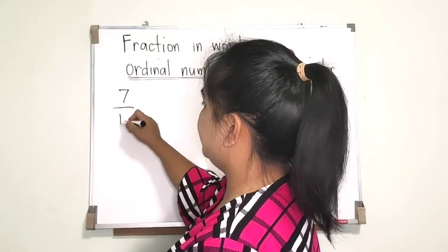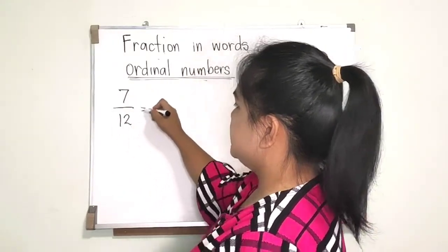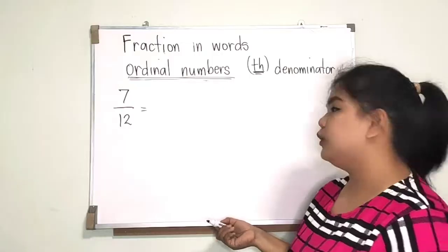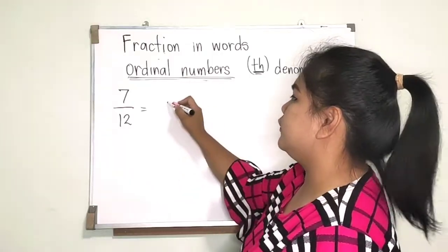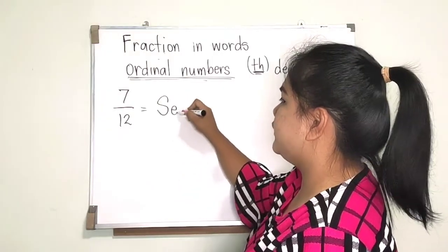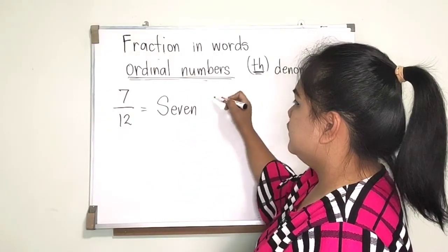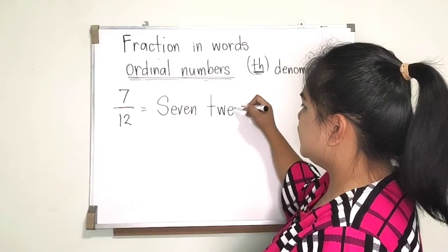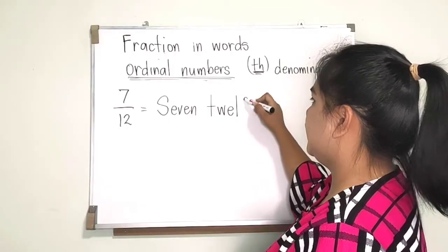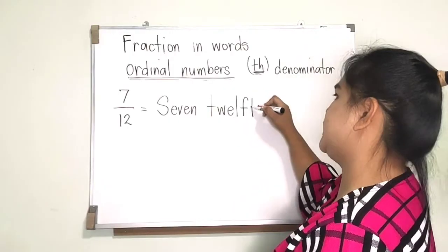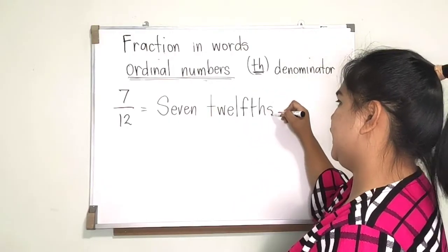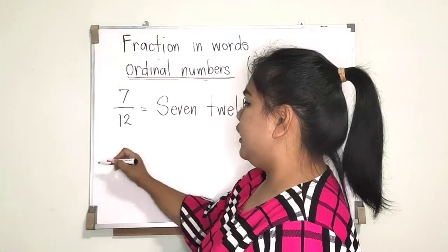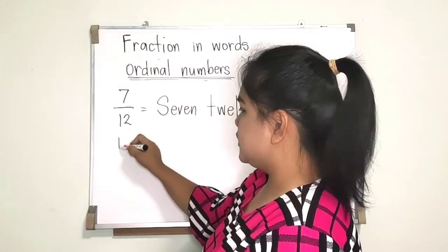For example, 7/12 — how do we write this into words? It will be 'seven' and then 'twelfths' — T-W-E-L-F-T-H — with S. So 'seven twelfths.'